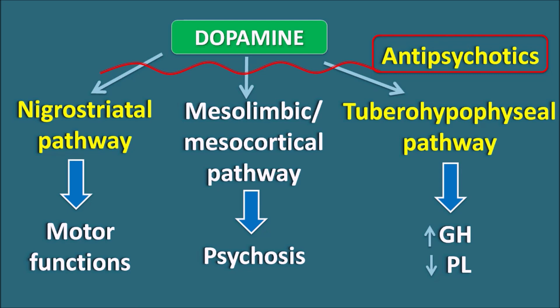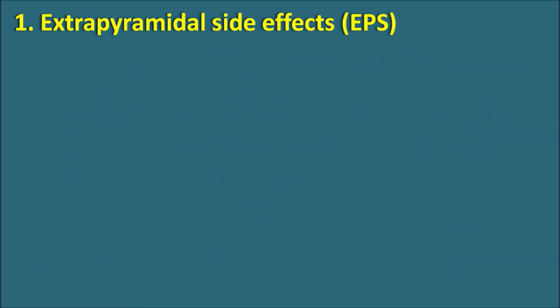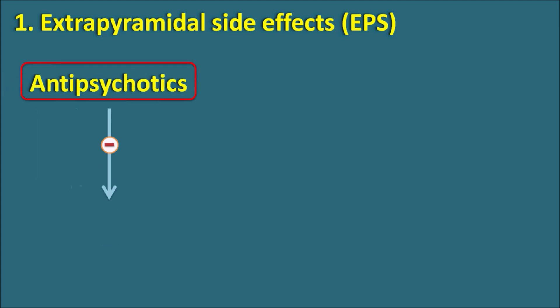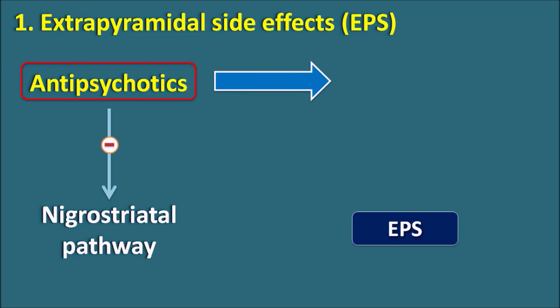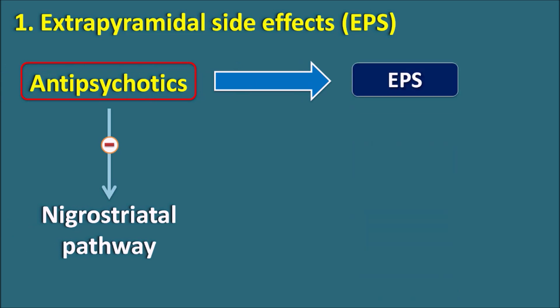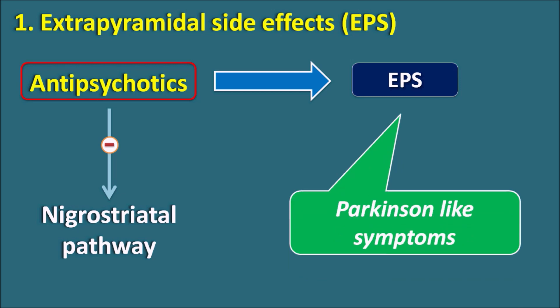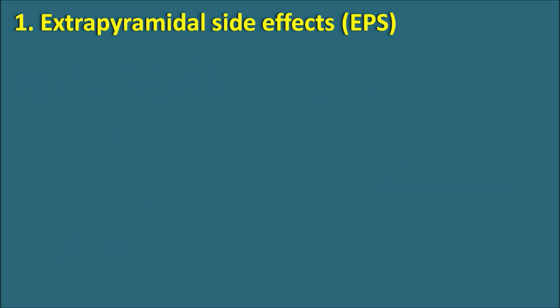By acting on the nigrostriatal pathway, antipsychotics produce motor disturbances resulting in extrapyramidal side effects. By acting on the tubero-hypophyseal pathway, they increase prolactin release resulting in endocrine side effects. The extrapyramidal side effects can be classified into four types based on the duration of treatment: acute dystonias, akathisia, Parkinson-like symptoms, and tardive dyskinesia.